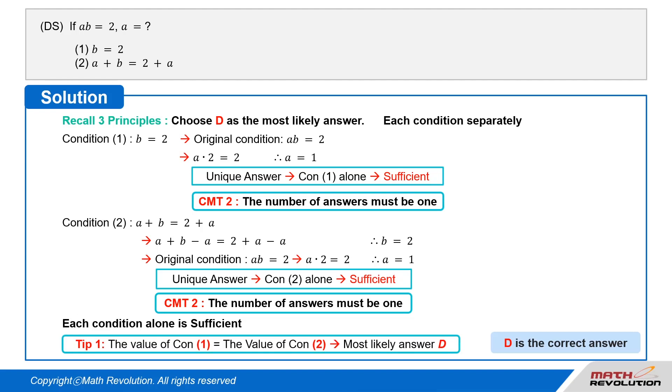Also, according to tip 1, if both the conditions give the same value, A equals 1 here, the most probable answer is D. It's about 95% likely that D would be the answer when the value of condition 1 is equal to the value of condition 2. The answer is D. Answer D.